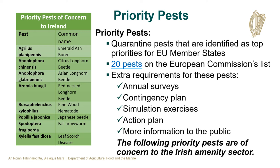Priority pests are quarantine pests that have been identified as top priorities for EU member states. There is a total of 20 priority pests on the European Commission's list. Priority pests have extra requirements for the National Plant Protection Organisation of member states. These requirements include annual surveys, contingency plans, simulation exercises, action plans and public awareness campaigns in relation to the pests.